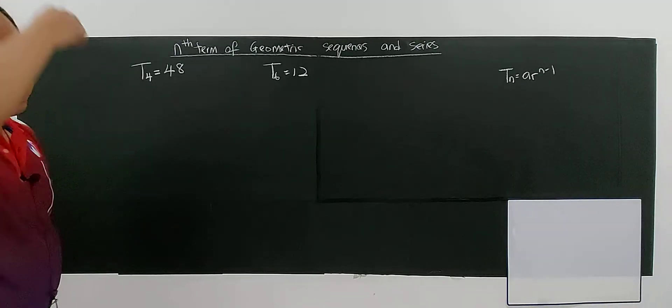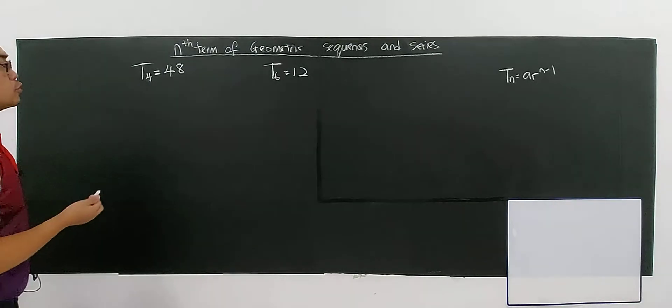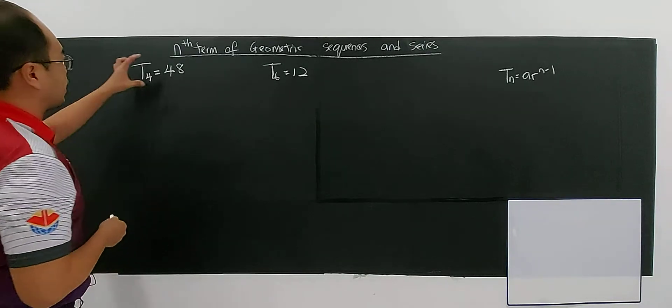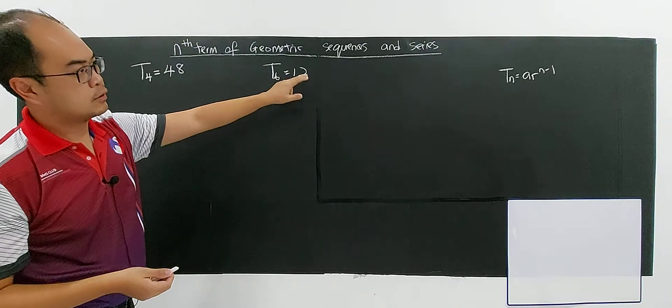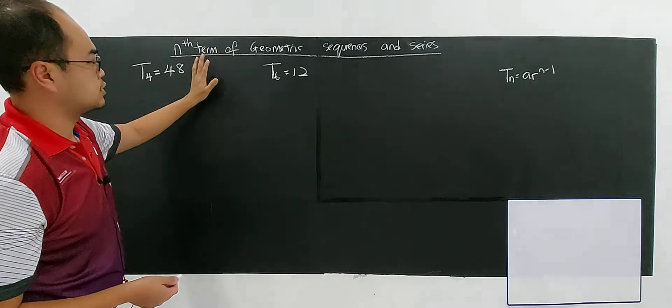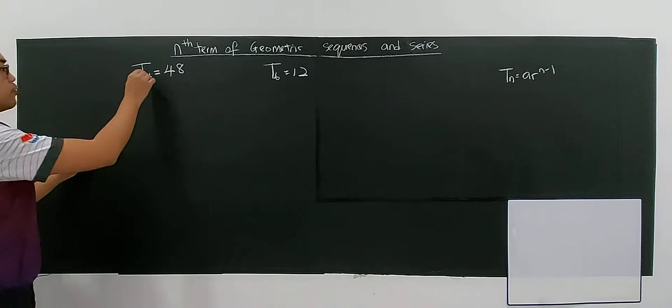This means there are possible values of the first term. In this case, you have the fourth term as 48 and the sixth term as 12. Don't use the wrong formula because this is a geometric sequence.